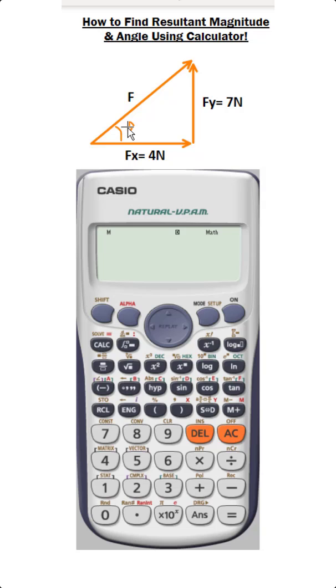Press shift and then this plus sign. By pressing shift we are activating this pol, this pol option. This is for the polar coordinates. So shift and then this plus.